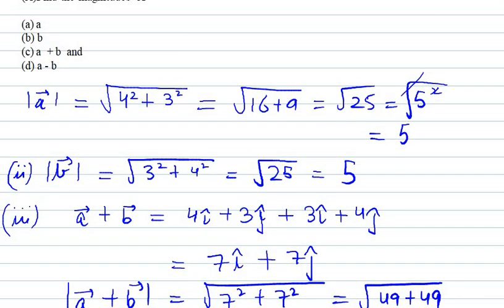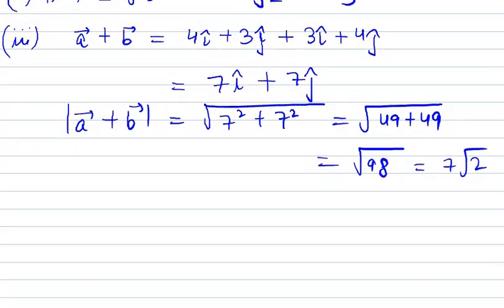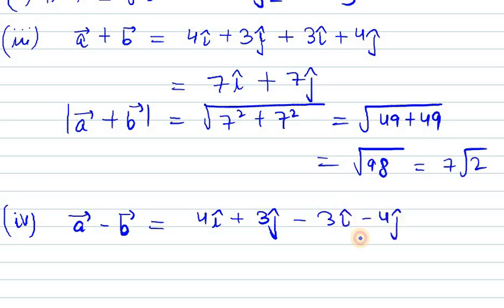Now we need to find the third one and third one is a minus b. So again we need to take or we need to subtract the vector a and b. So 4i cap plus 3j cap minus 3i cap minus 4j cap. So it is i cap subtracting these two and subtracting these two we get minus j cap. So we have i minus j cap.